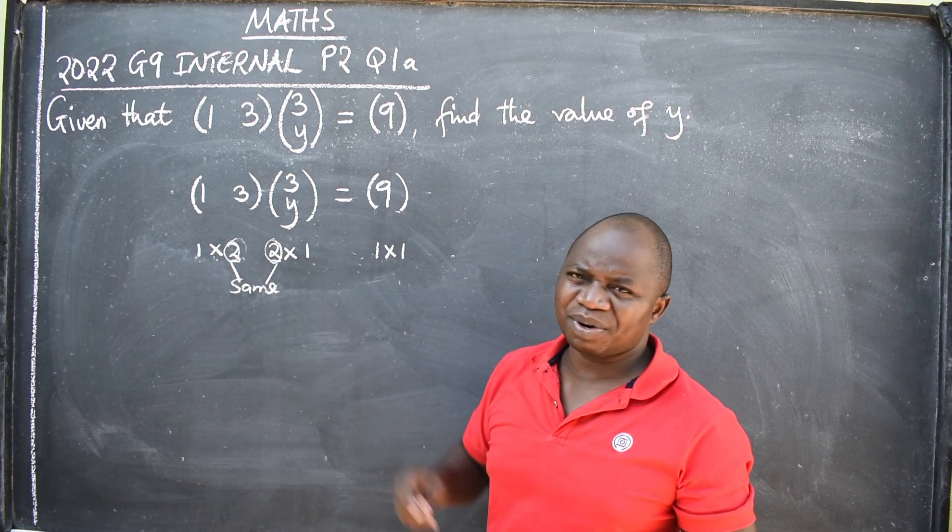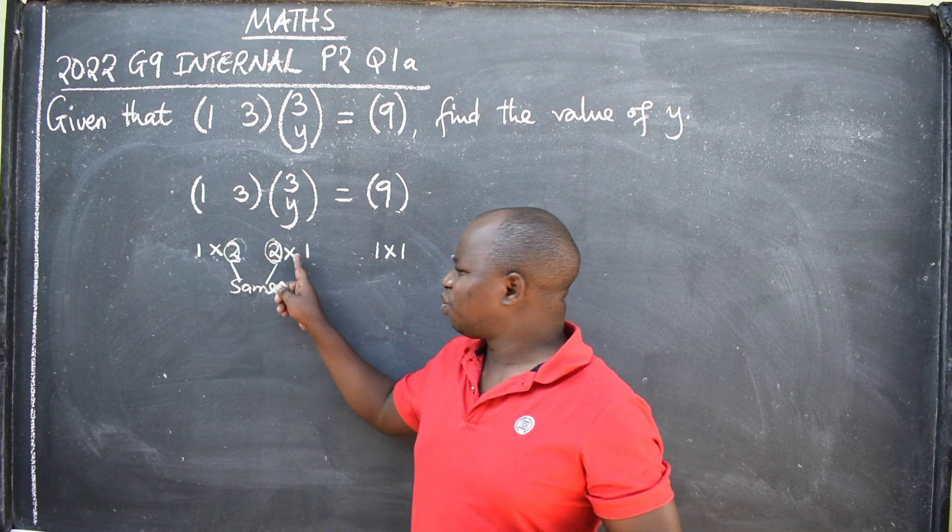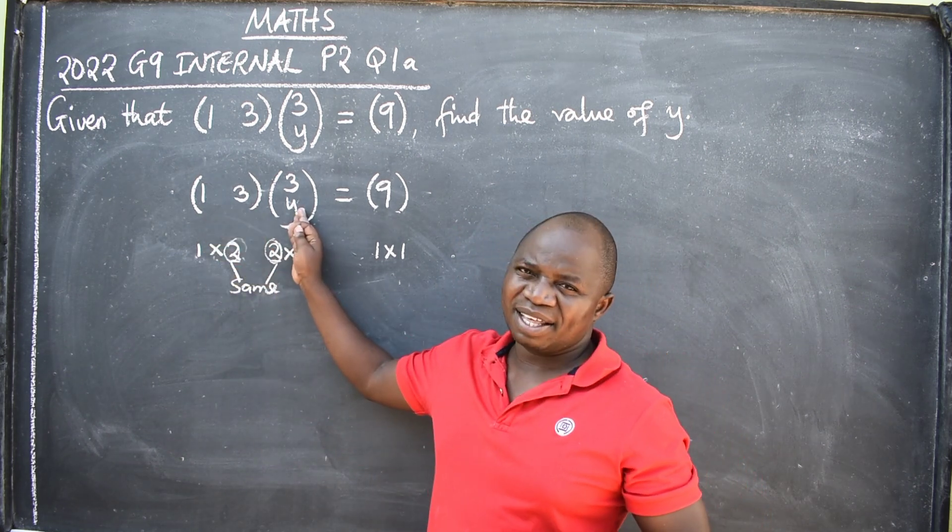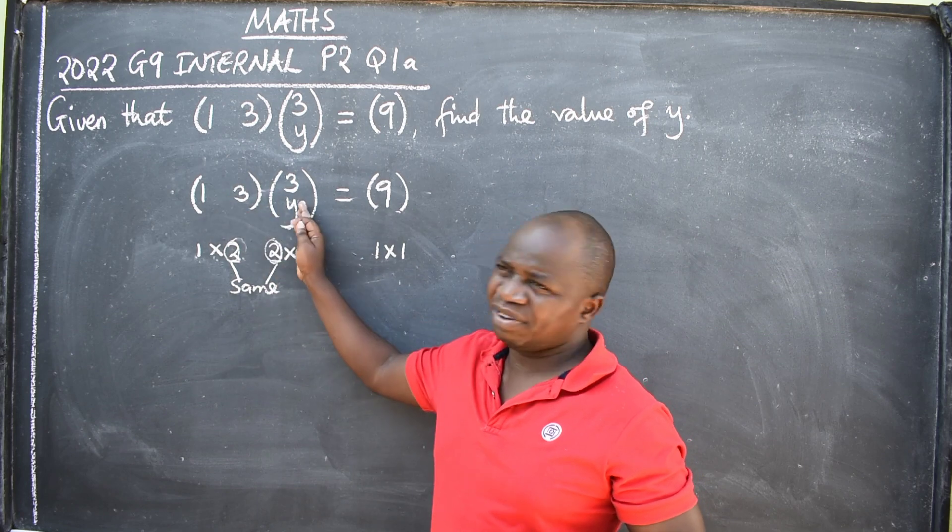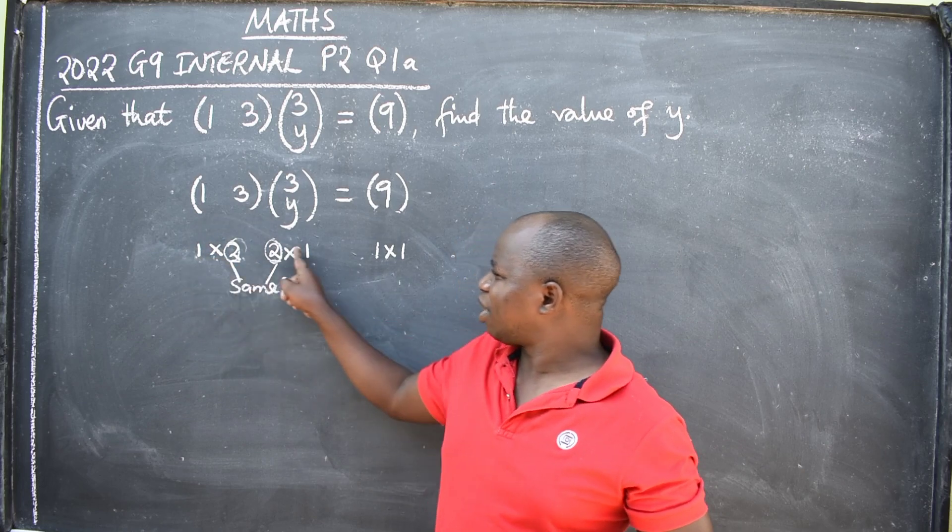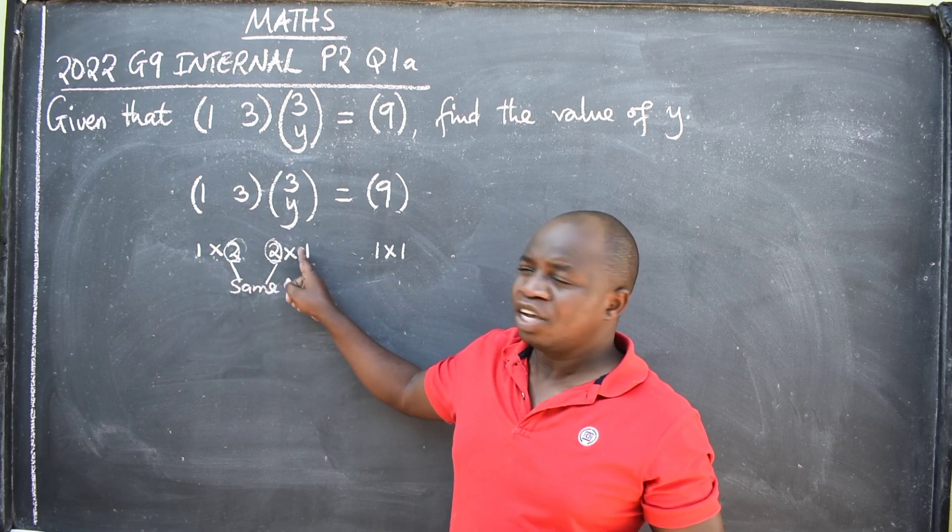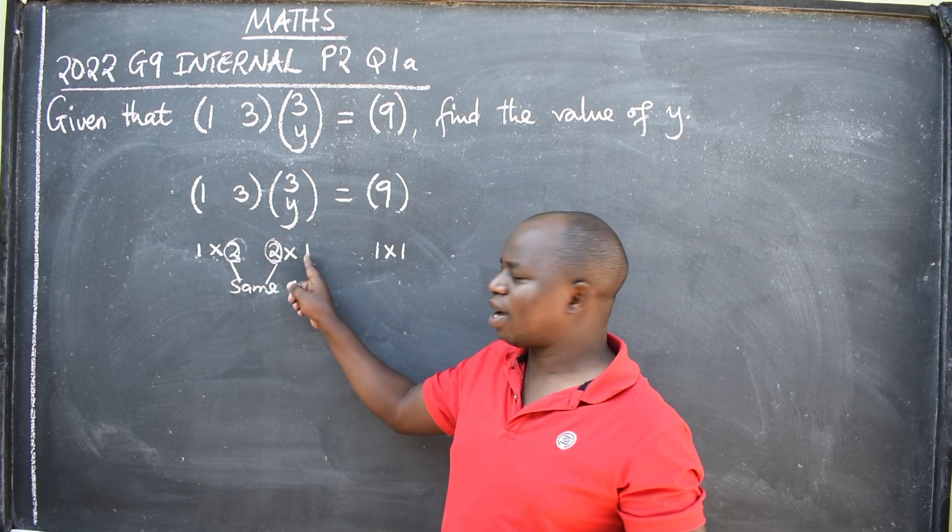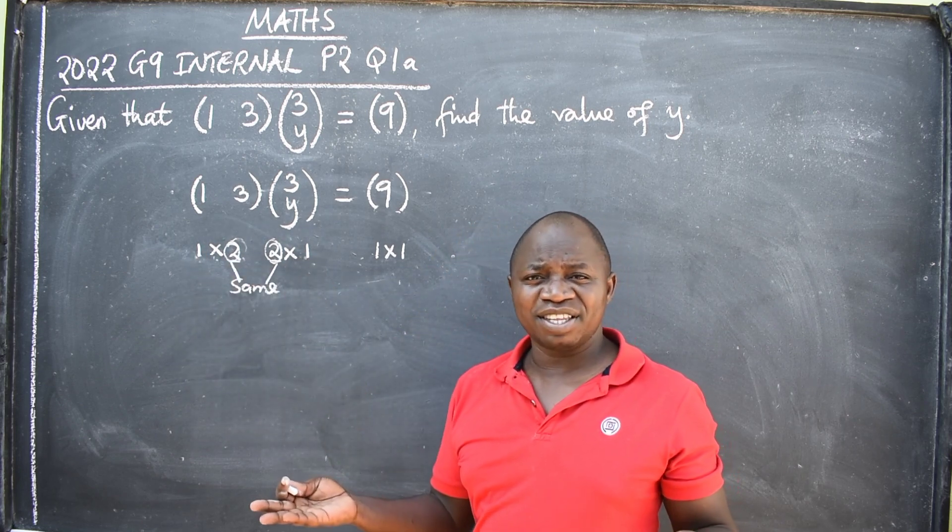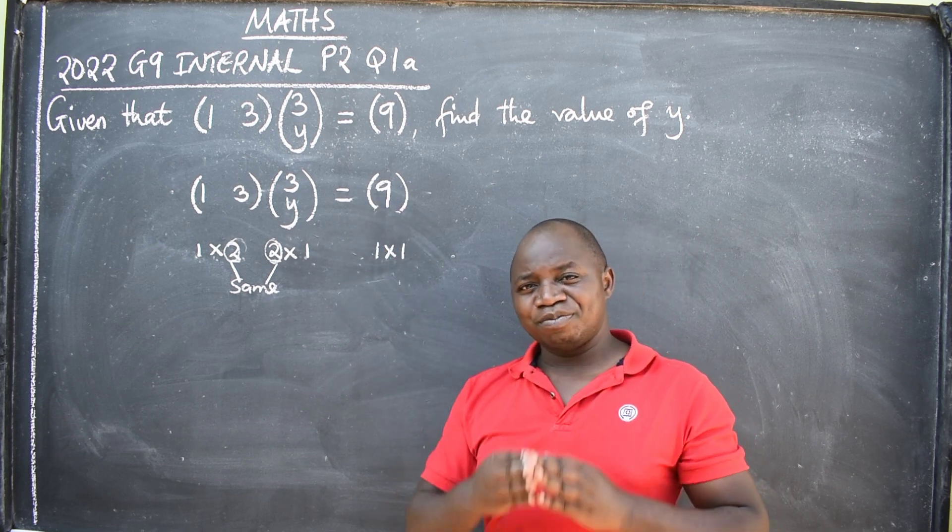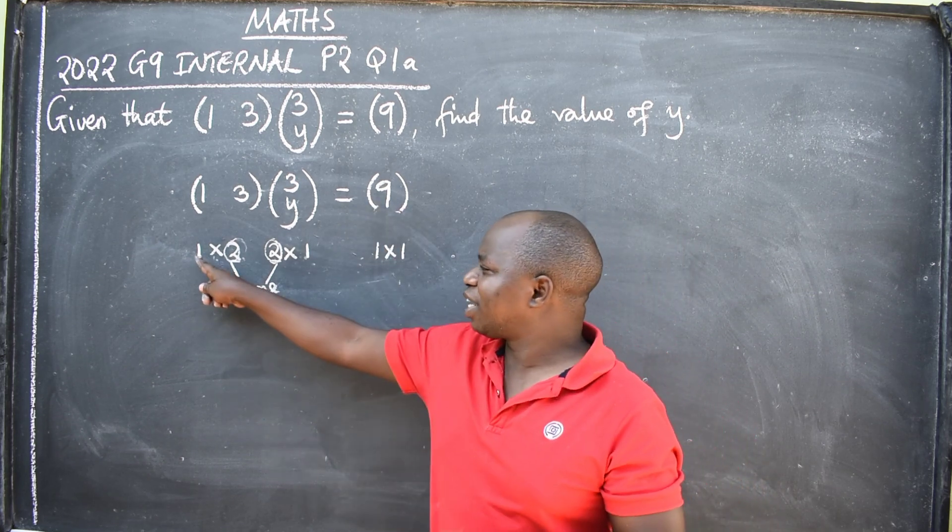What about the remaining two numbers? The first one here and the last one. These two are now telling me that when I multiply the two matrices, the answer that I'm going to get, this should be the order. So, after multiplying, the order of the answer should be a one by one. Have you seen that? Look at this. One by one. Now, let's multiply and see if we are going to get a one by one.